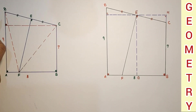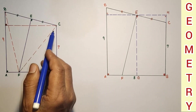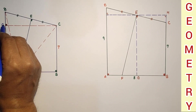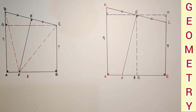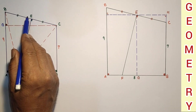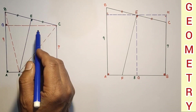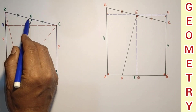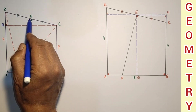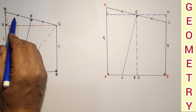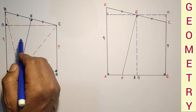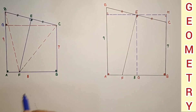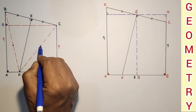In Method 1, we join DF and FC, and from point C we draw a perpendicular to AD. Since E is the midpoint of DC and EF is perpendicular to DC, we have DE equal to EC, EF is common, and both angles are 90°. By the Side-Angle-Side test these two triangles are congruent, and hence DF equals FC.